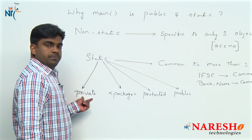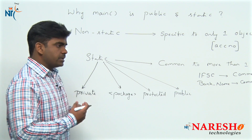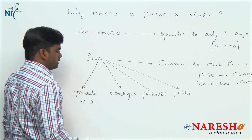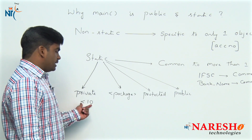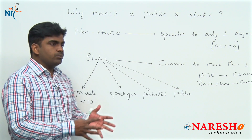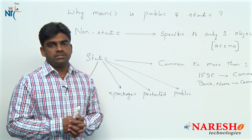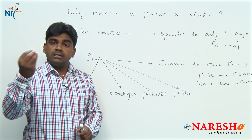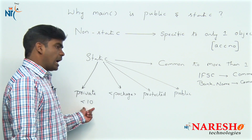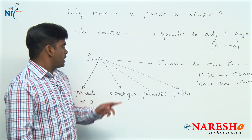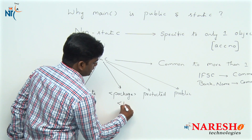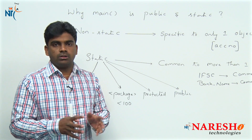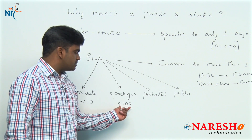What is private type? Static private means it is more than one but consider less than 10. For example, 10 people living in one house — there is one common room, only those 10 people will access it. The room is common for only 10 people; outside persons are not allowed. For static package level, consider around 100 — there is one apartment with a common area for the people living in that apartment, so that is less than 100.